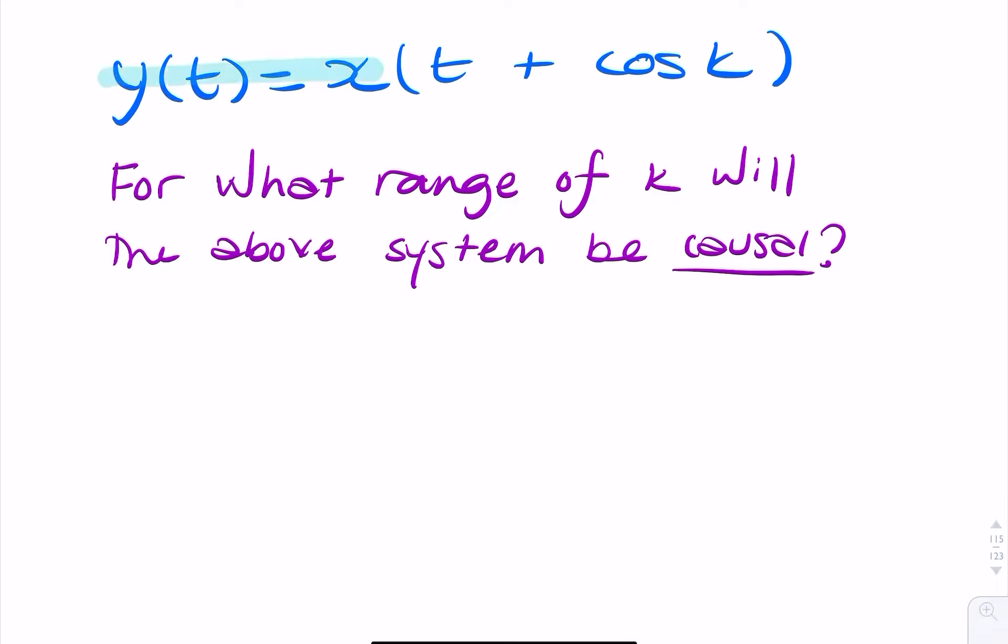In this question, we're given a system that relates the input x of t to the output y of t, and we're asked for what range of values of k will this system be causal? So k is right there. For what values of k will this system be causal?